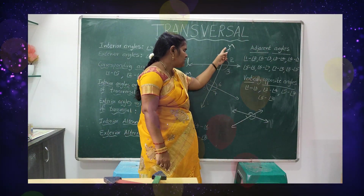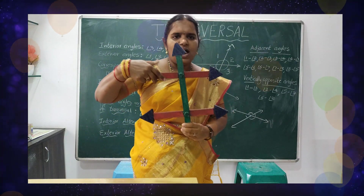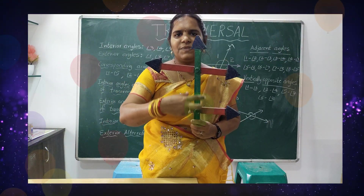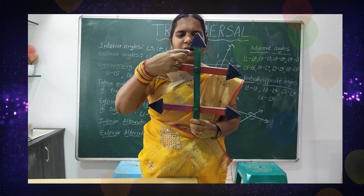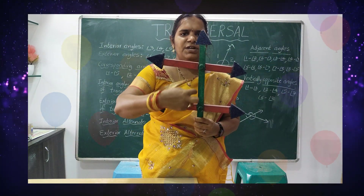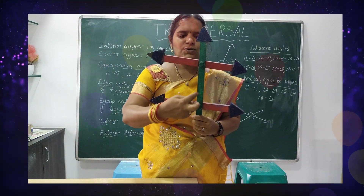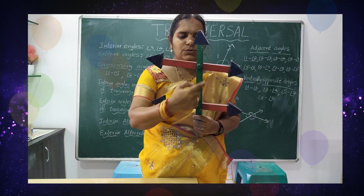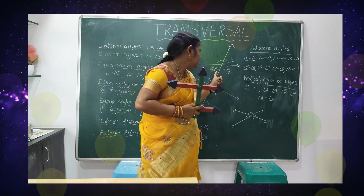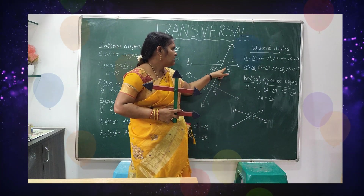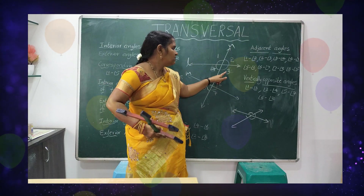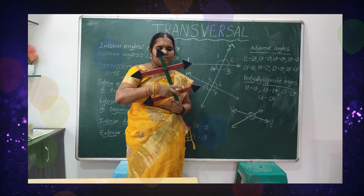Now if you see these two lines and the transversal, we have an outside part and an inside part. Inside, how many angles do we have? One, two, three, four — four angles. Those are called interior angles. The interior angles are three, four, five, and six — they are on the inside.